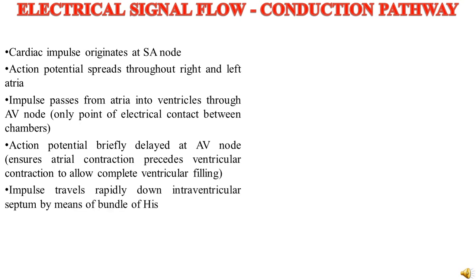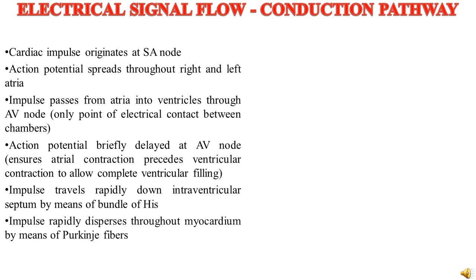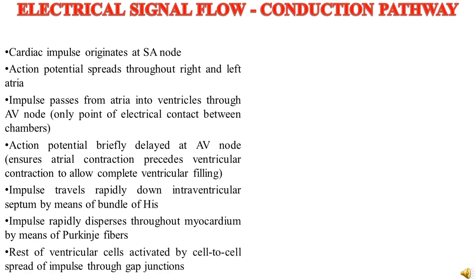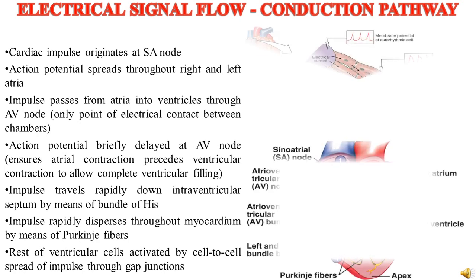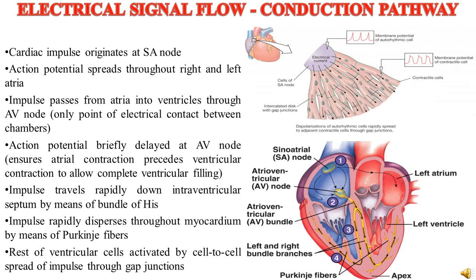The impulse then travels rapidly down the interventricular septum by means of the bundle of His and Purkinje fibers. The impulse rapidly disperses throughout the myocardium by means of Purkinje fibers. The rest of the ventricular cells are activated by cell-to-cell spread of the impulse through gap junctions. Two diagrams show the conduction of electrical impulse, its origination, and its transfer from one part to another.